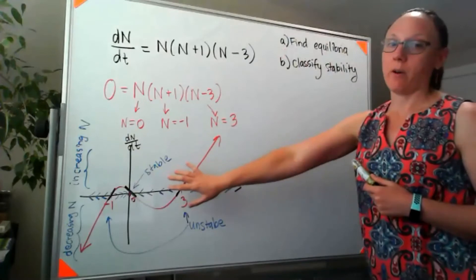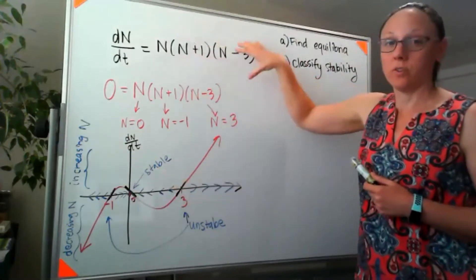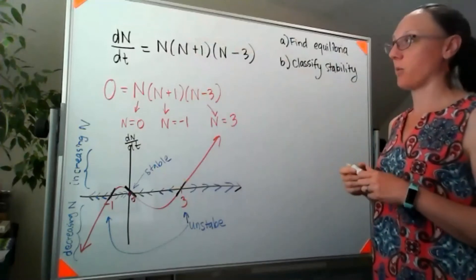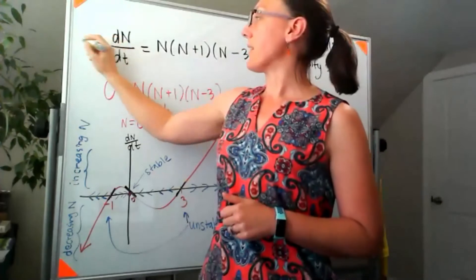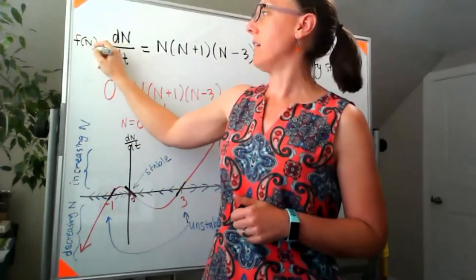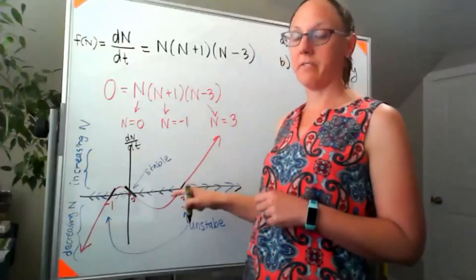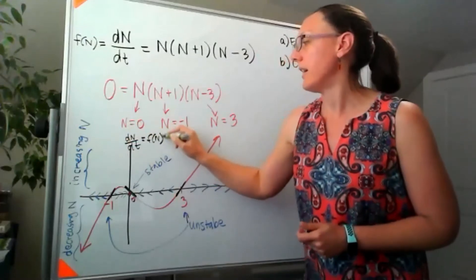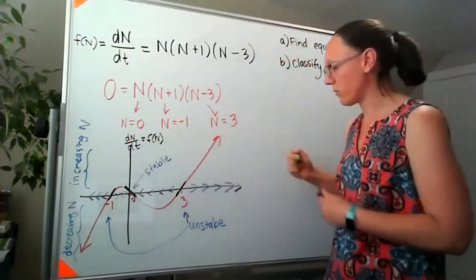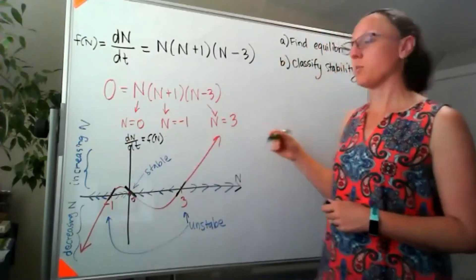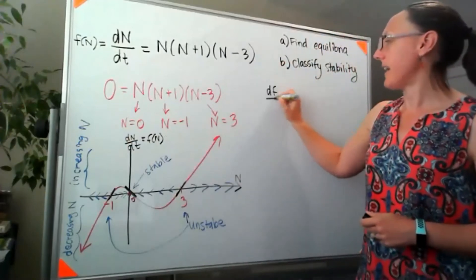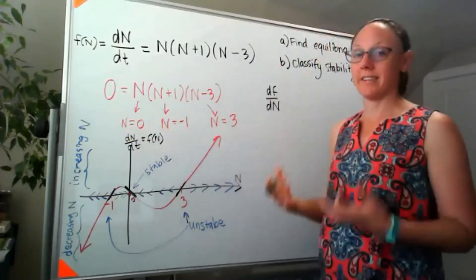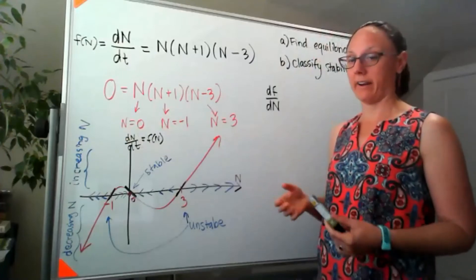Well, the way that we would do that without getting the graph is come back up to our equation, dN/dt equals n times (n+1) times (n-3). If I think about this as my function of n, then this slope down here of this curve, we're looking at how our function f(n) changes with respect to n, which means we're finding df/dn and then we're going to plug in each of our equilibria to test whether we end up with a positive slope or a negative slope.